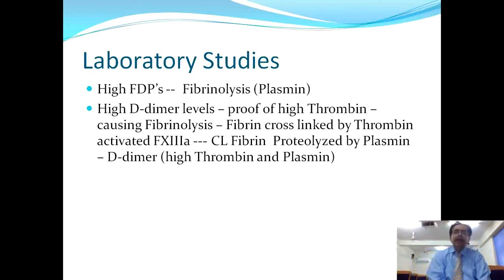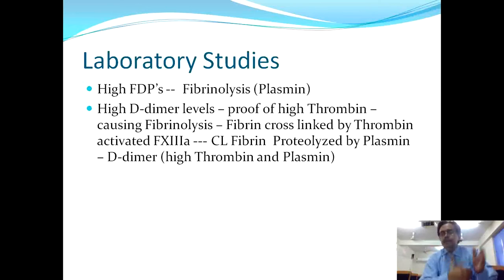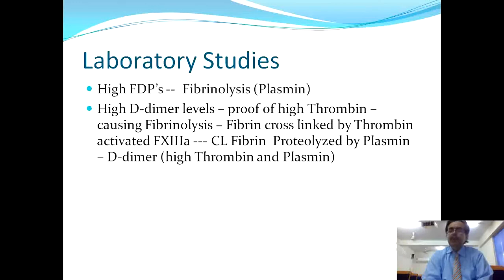High D-dimer levels are proof of high thrombin activity. FDPs are elevated because plasmin causes fibrinolysis. Fibrin is cross-linked by thrombin-activated factor 13A, and this cross-linked fibrin is proteolyzed by plasmin. The D-dimers and FDPs produced are very important tests in DIC and are raised in DIC states.